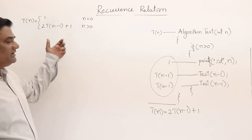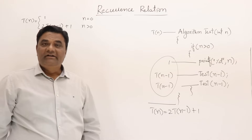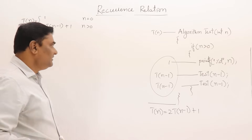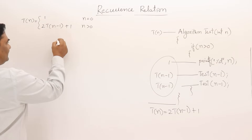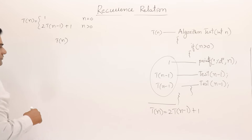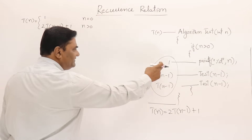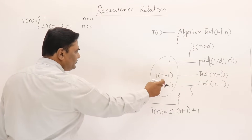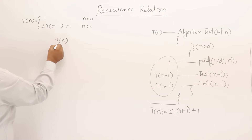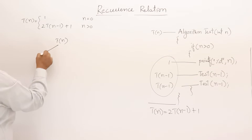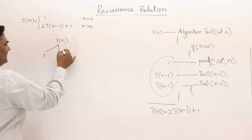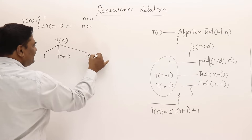T(n) — let us solve this using the recursion tree method. From the algorithm also I can see it is printing and calling itself two times. For printing it takes one unit of time and then it calls itself for n−1 and again calls itself for n−1.